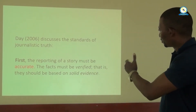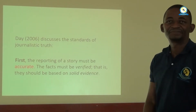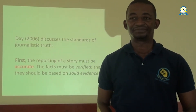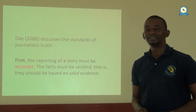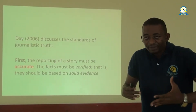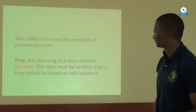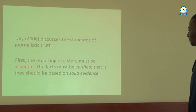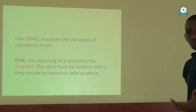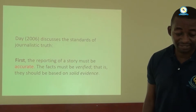Today (2006) discusses the standards of journalistic truth. First, the reporting of the story must be accurate. The facts must be verified — that is, they should be based on solid evidence. As a journalist today, we have so many problems, especially in Africa, where you find that a journalist has just been hiding within one of the media organizations.